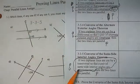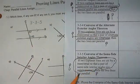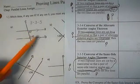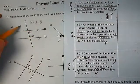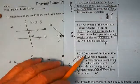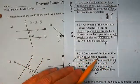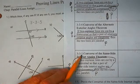If we have same side interior angles supplementary, then the two lines are parallel. So these are parallel by the converse of the same side interior angles theorem, 3-3-5.